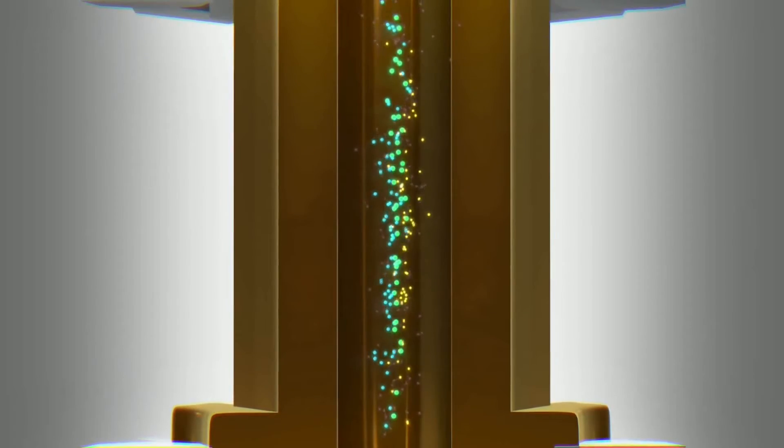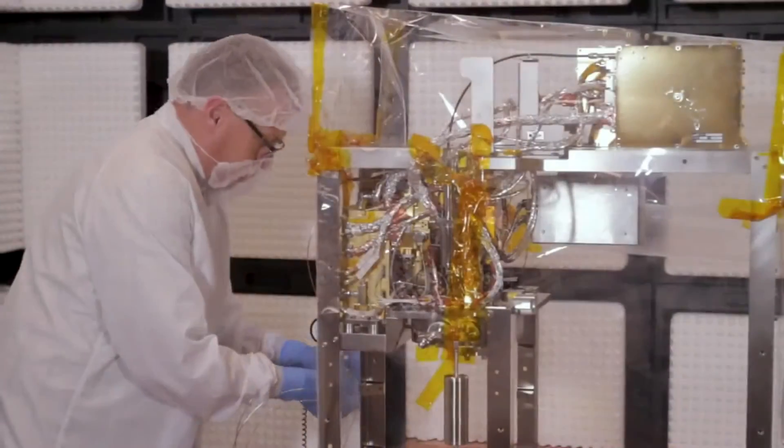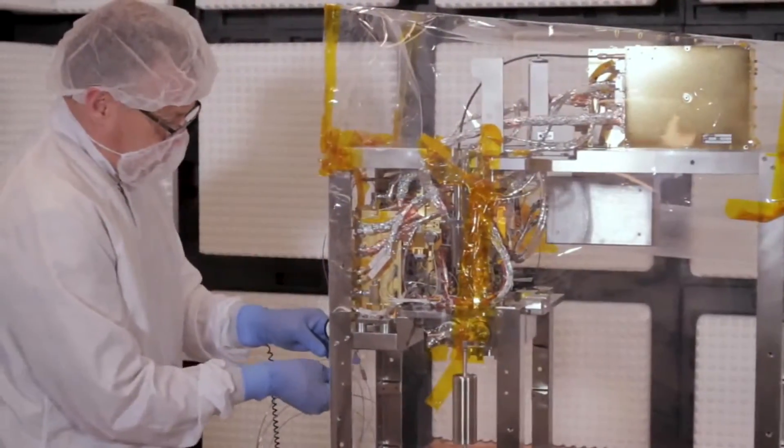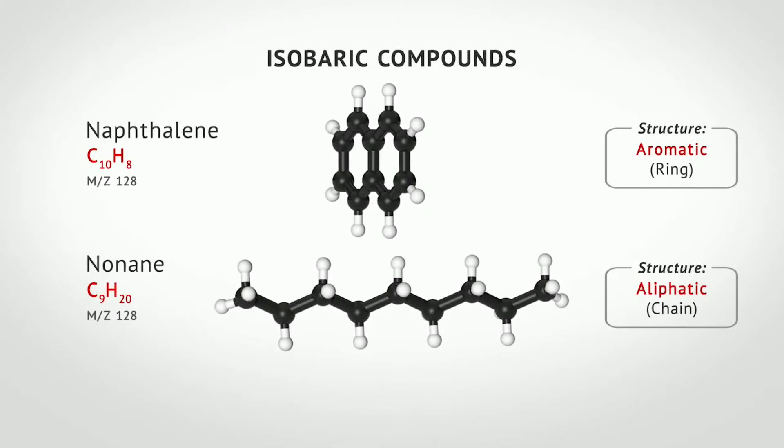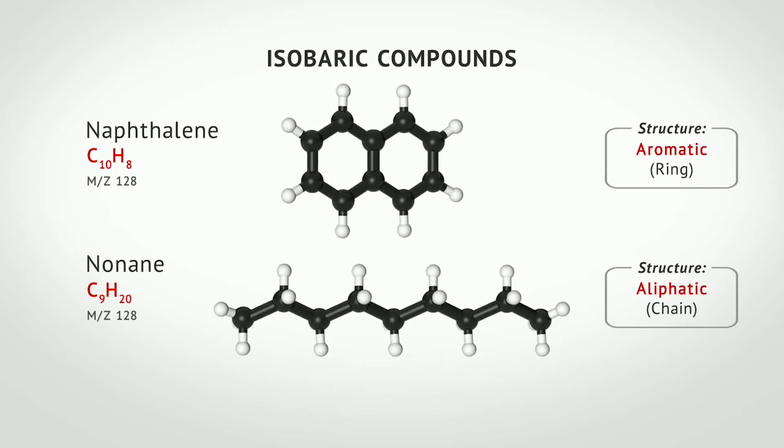Another technique is tandem mass spectrometry, or MS-MS, which identifies large molecules by breaking them apart and analyzing their fragments. By combining SWIFT and MS-MS, MOMA can determine an individual molecule's formula and its structure, both important criteria in the search for life.